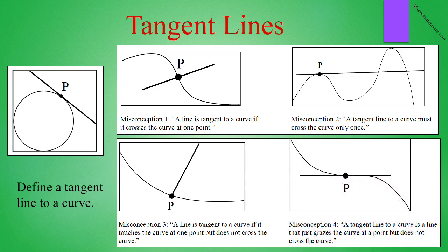Finally, you may have written that a tangent line to a curve is a line that just grazes the curve at a point but does not cross the curve. This is also wrong. The line shown is tangent to the curve at point P, but it does cross the curve as well.